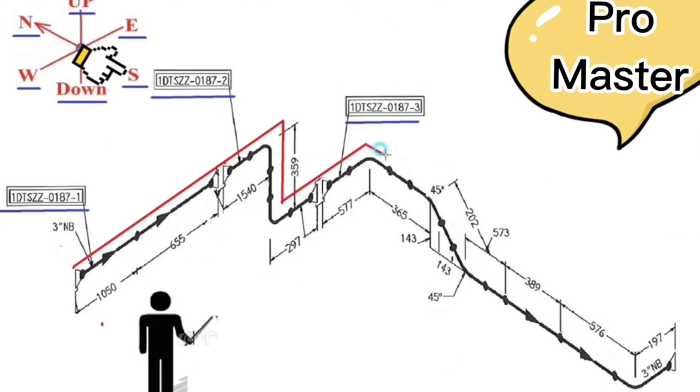After this point, the pipe travels to the south. At this point, there is a vertical angle of 45 degrees. Therefore, the pipe travels to the down. Then it travels south at an angle of 45 degrees.